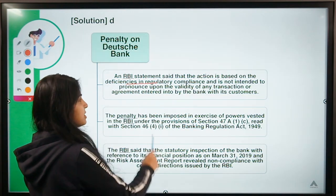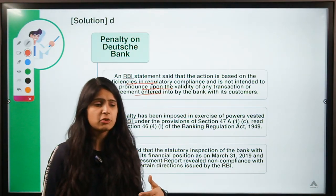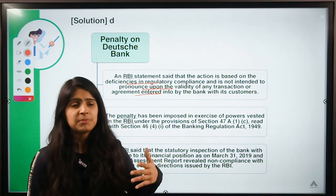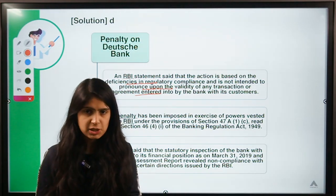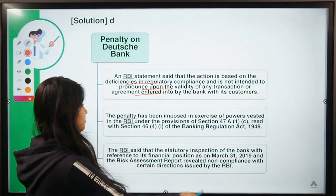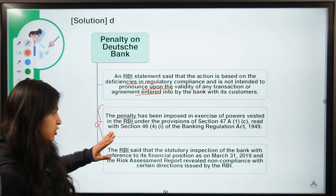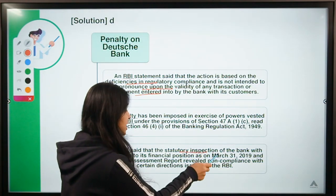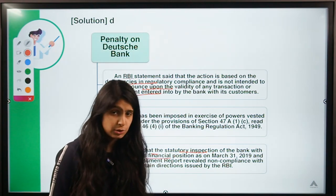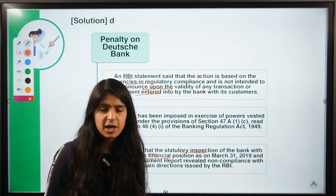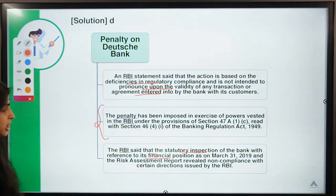RBI said that this action is based on deficiencies in regulatory compliance and is not intended to pronounce upon the validity of any transaction. RBI clarified they are not going to hamper operations or invalidate any transactions, but just because the bank was unable to comply with regulations, they will face the penalty. RBI did an inspection of the bank, asked the bank to explain why a penalty should not be imposed, and the bank failed to provide a satisfactory answer, so RBI decided to impose the penalty.